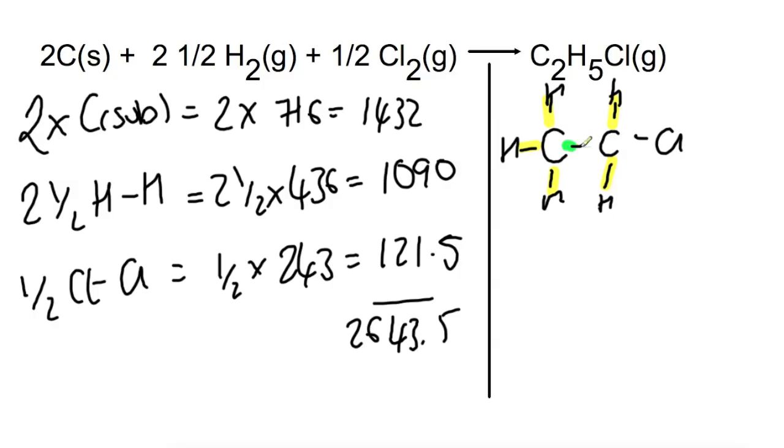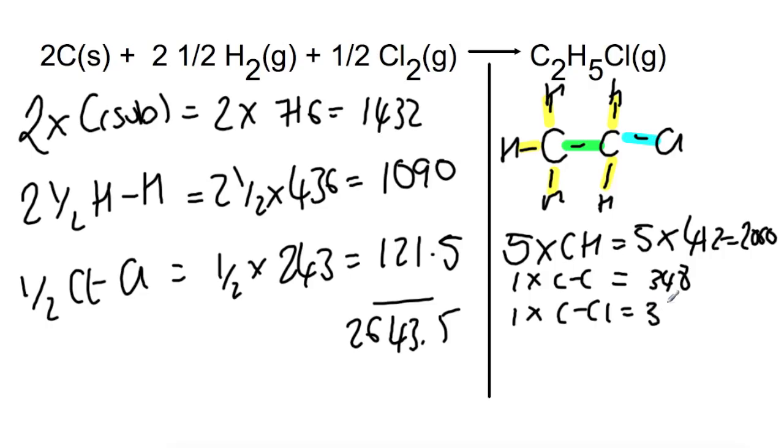We've made one C-C bond here in the middle, in green. And then one C-Cl bond on the end there. So we're going to have 5 times C-H. So that's going to be 5 times 412, which is 2060. We've got one times a C single bond C bond, which is 348. And then one times a C single bond Cl, which is 338.